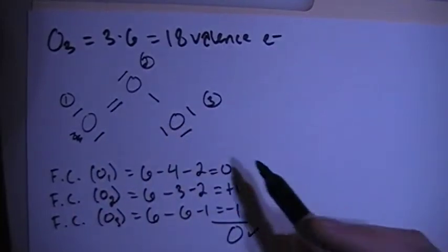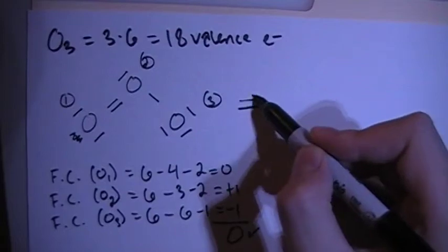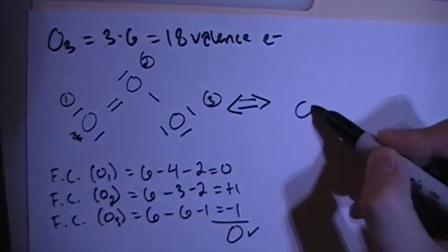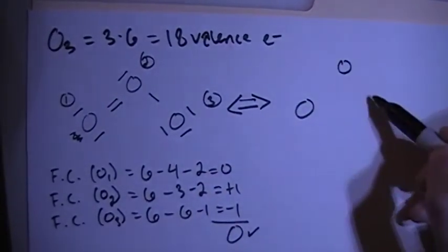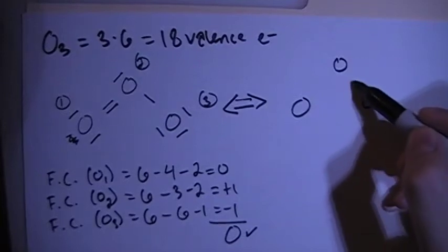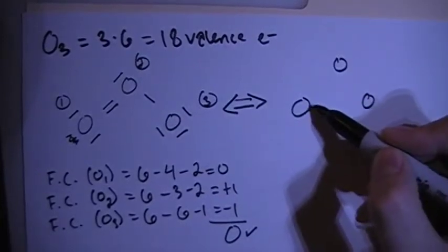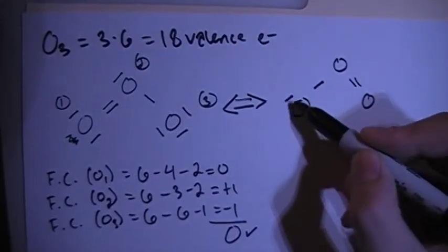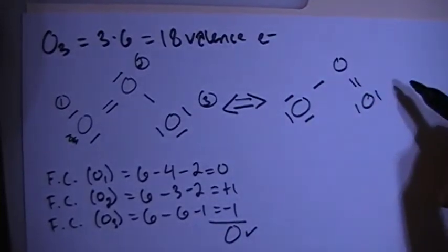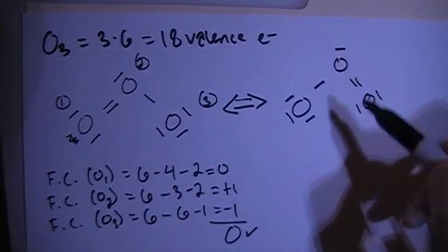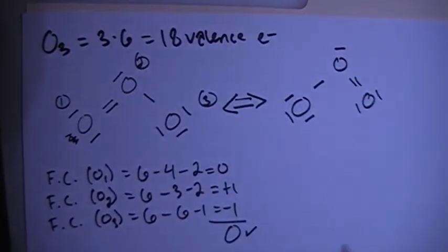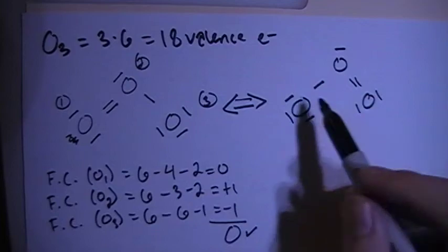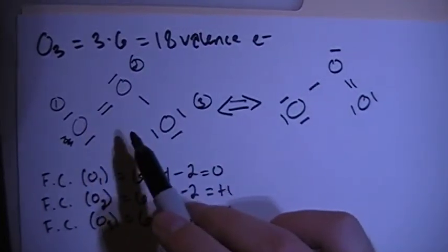Who is to say it should be that one. That's why you have to draw the resonance structures. So we'll have one more structure over here. Now, instead of this oxygen having a double bond, this one will. So we have double bond here, single bond here. Now we're all set up. Each oxygen has the full octet. It's just a mirrored version of this structure over here.